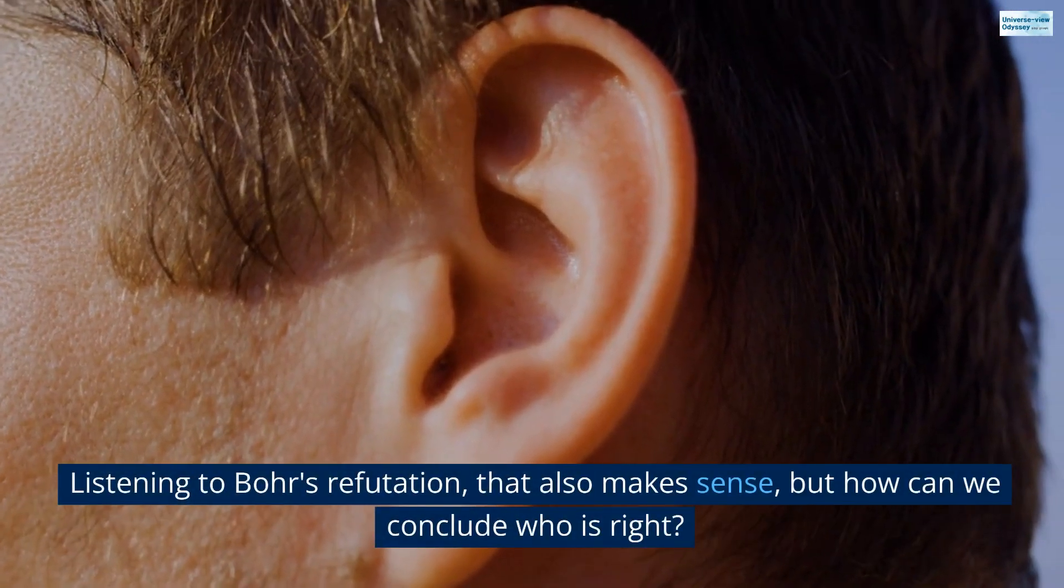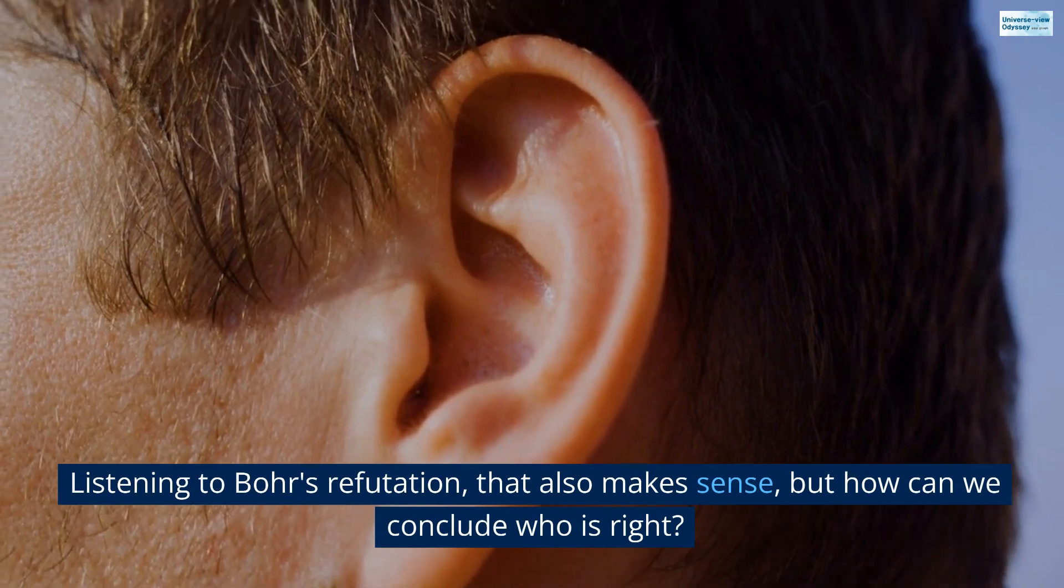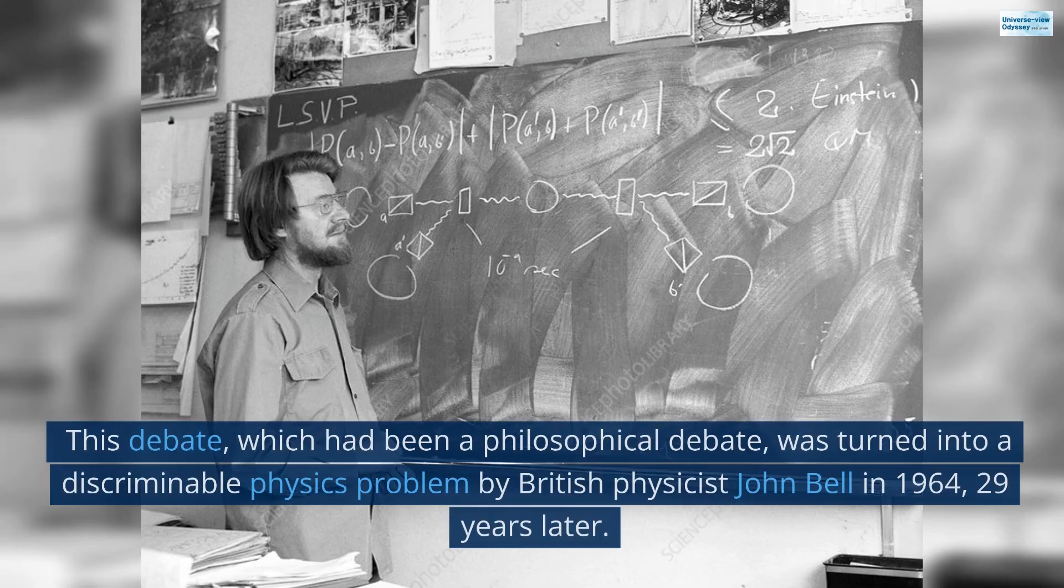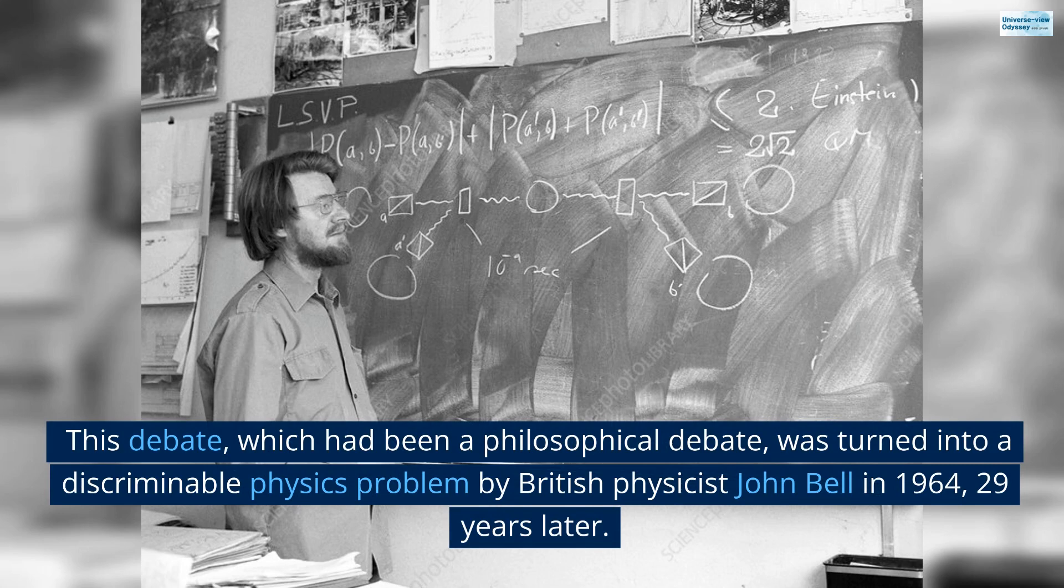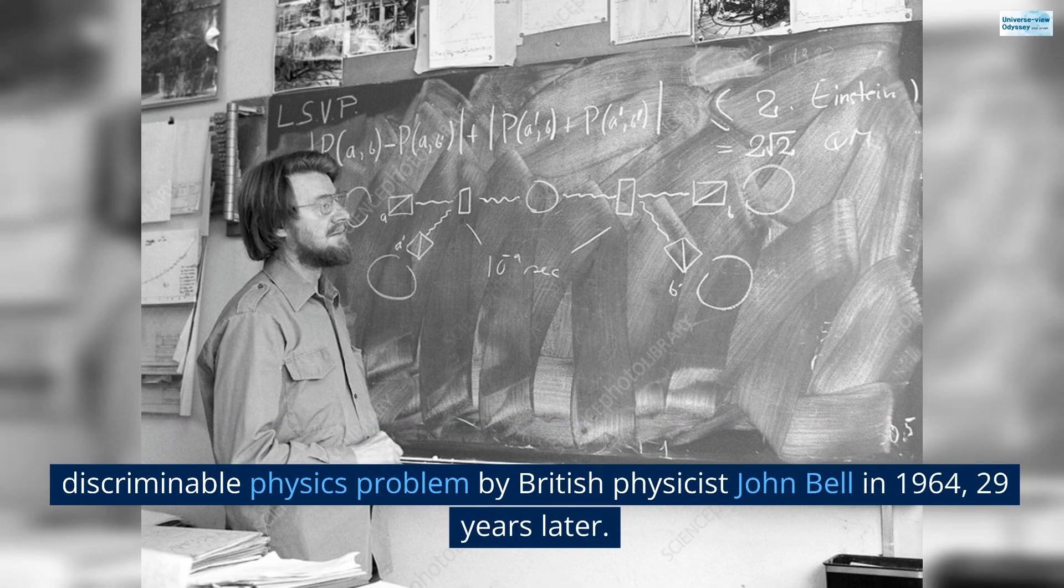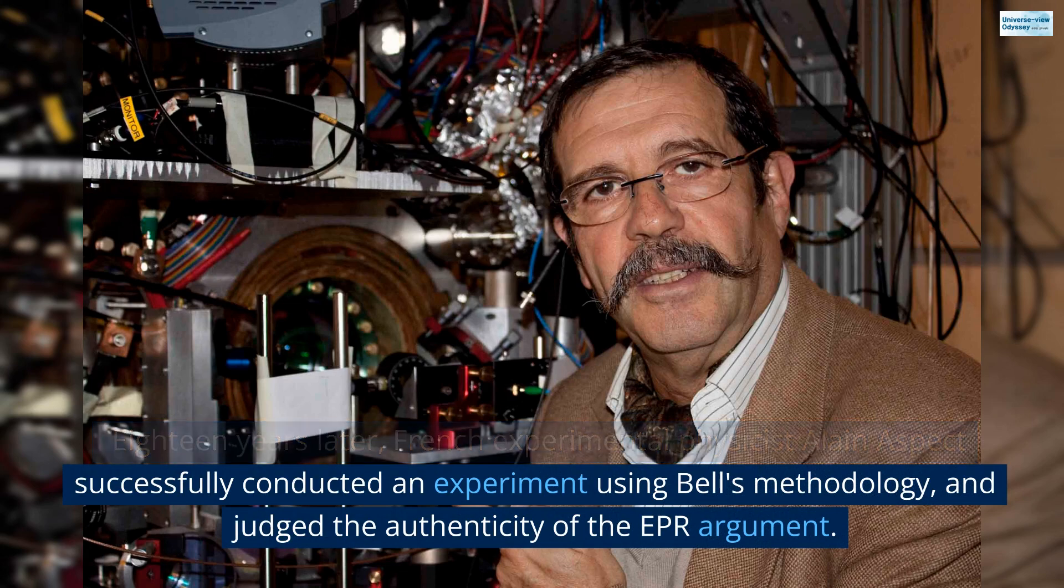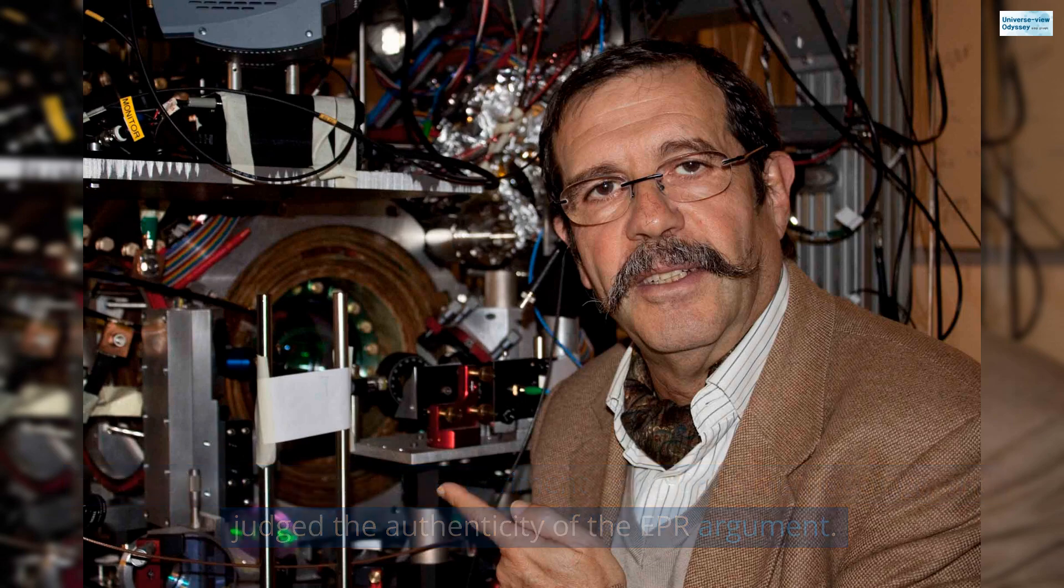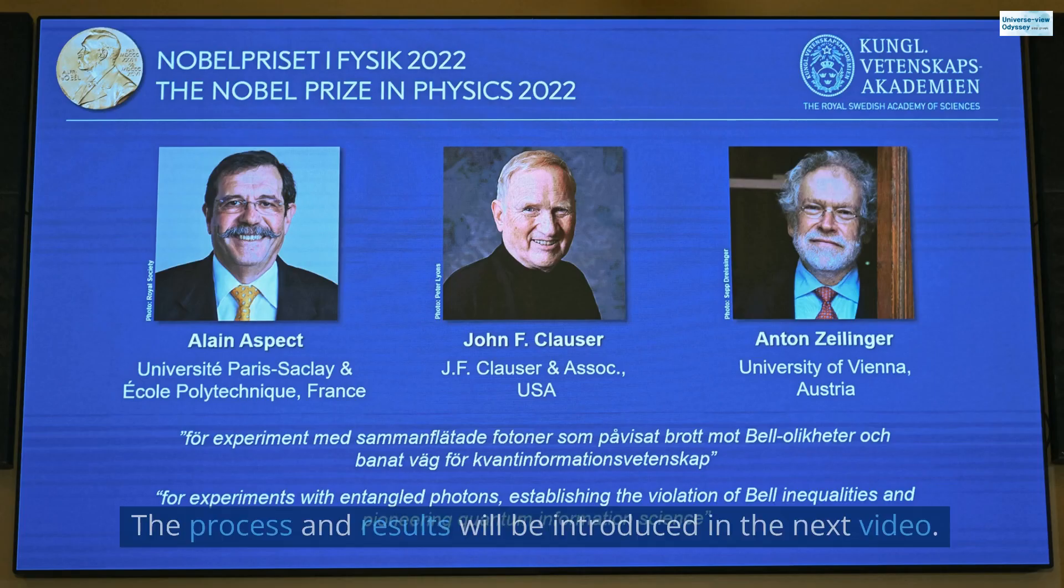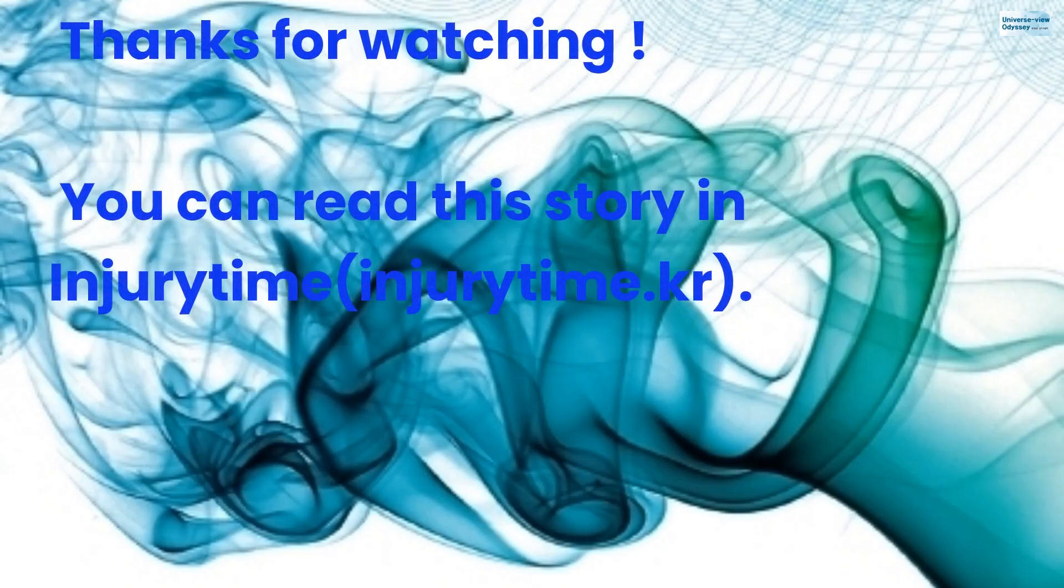Listening to Bohr's refutation, that also makes sense. But how can we conclude who is right? This debate, which had been a philosophical debate, was turned into a discriminable physics problem by British physicist John Bell in 1964, 29 years later. 18 years later, French experimental physicist Alan Aspect successfully conducted an experiment using Bell's methodology and judged the authenticity of the EPR argument. The process and results will be introduced in the next video. Thanks for watching. You can read this story in Injury Time, InjuryTime.kr